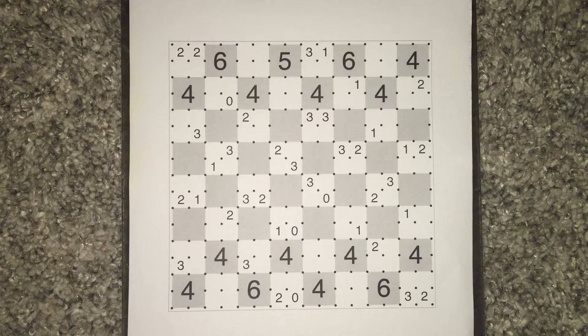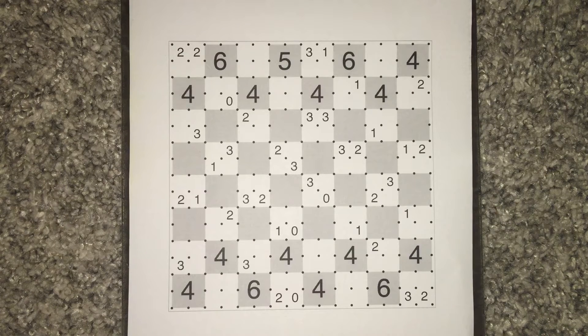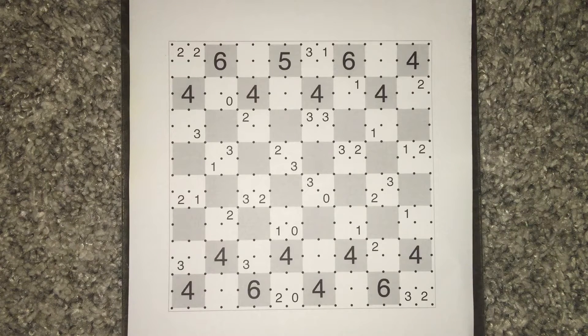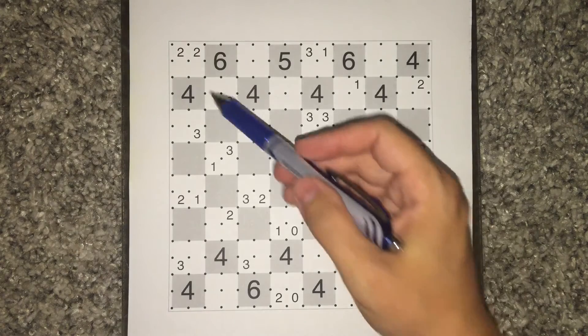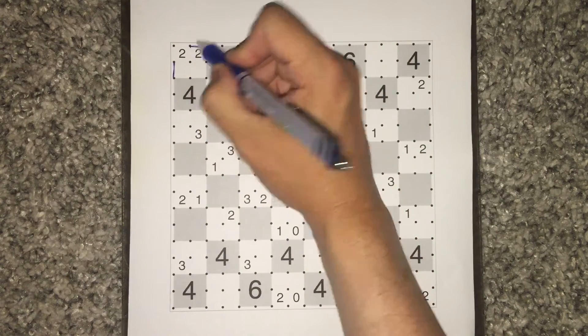So we're here to talk through this SlitherLink by Bryce. There are a couple of places to begin throughout the grid, but something I'd just like to observe at the start is something that you can often do in SlitherLink puzzles to recognize corner type clues.